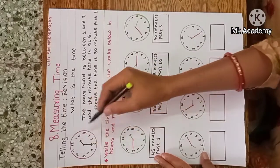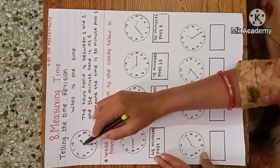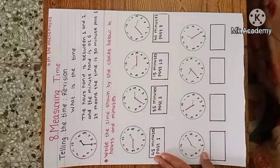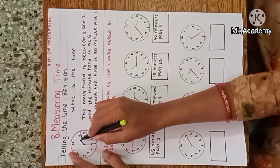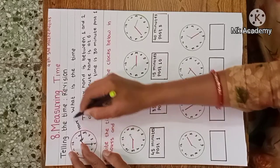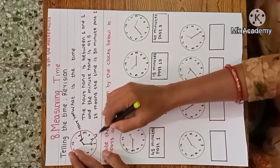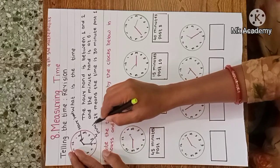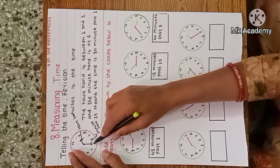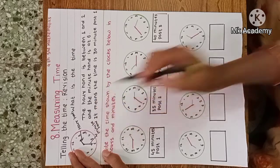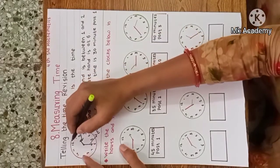In the picture, this is a picture of a watch or clock. In the clock, this short hand is called the hour hand and this long hand is called the minute hand. The minute hand tells us minutes and the hour hand tells us the hour.